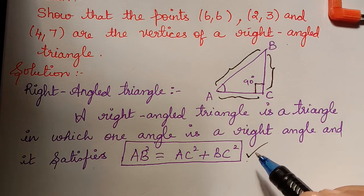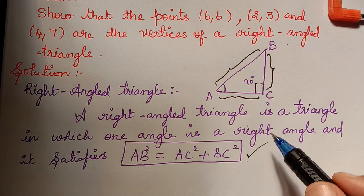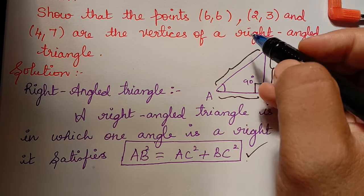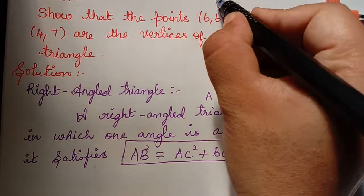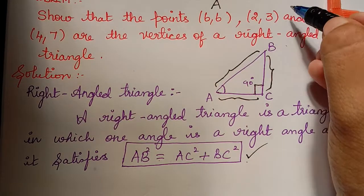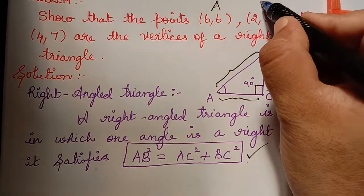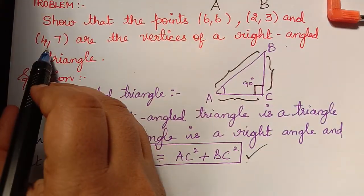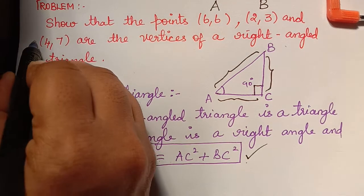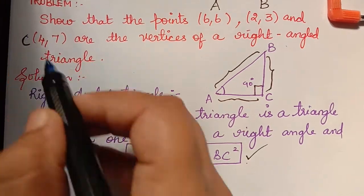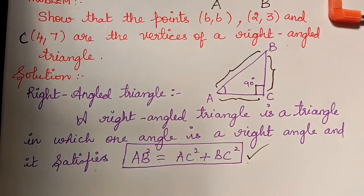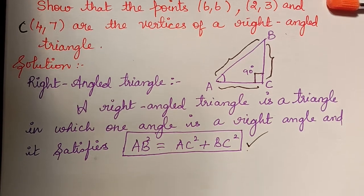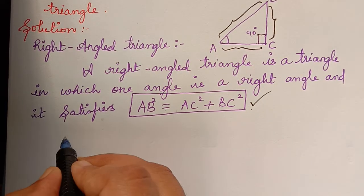Now we shall mark the points A, B, C. The given point 6,6 can be taken as A, 2,3 can be taken as B, and 4,7 can be taken as point C. Now let us find AB² for which we should first find AB using the distance formula.